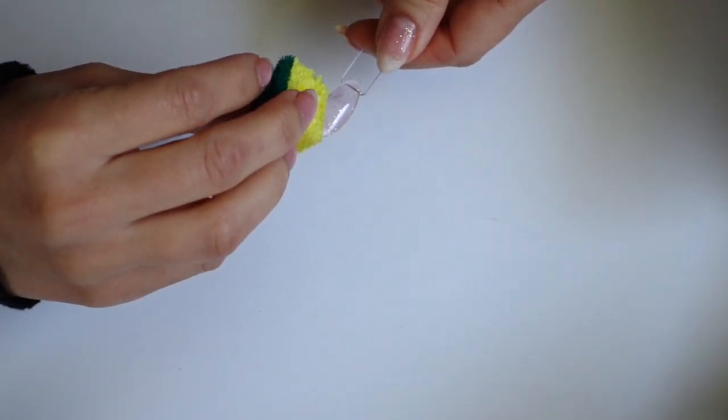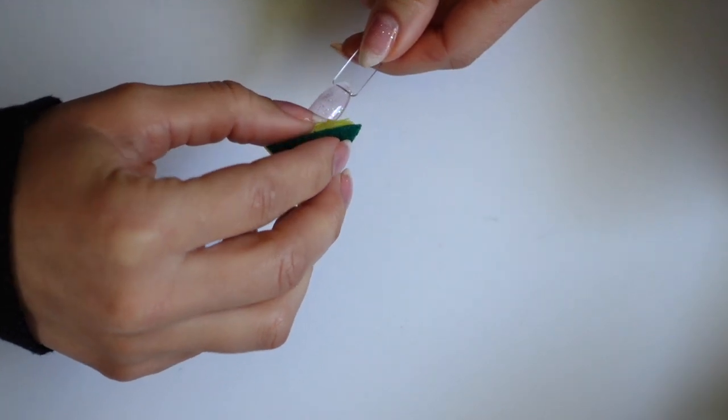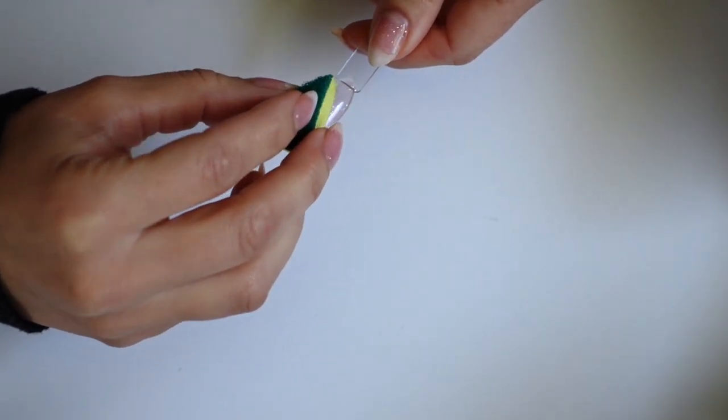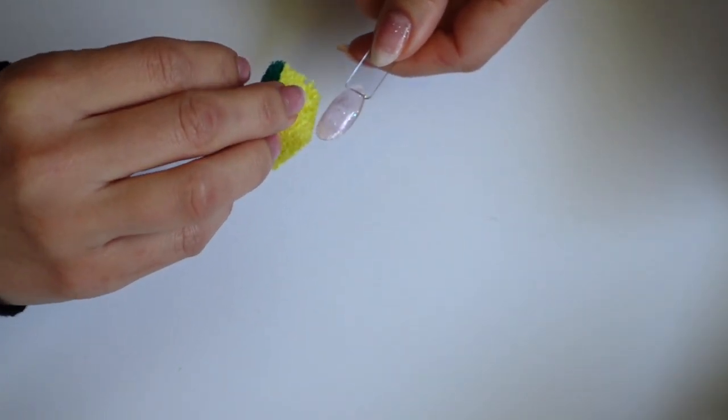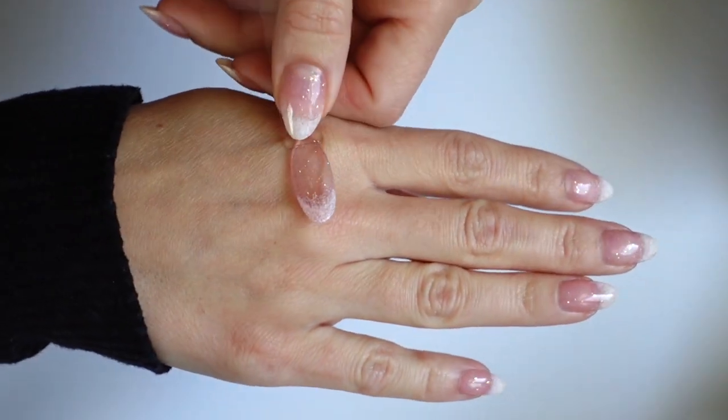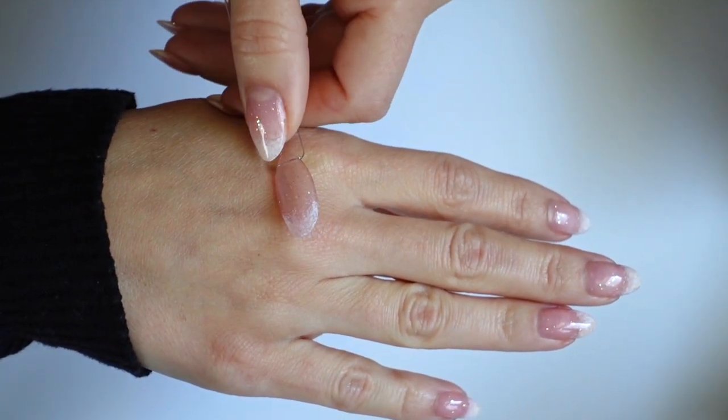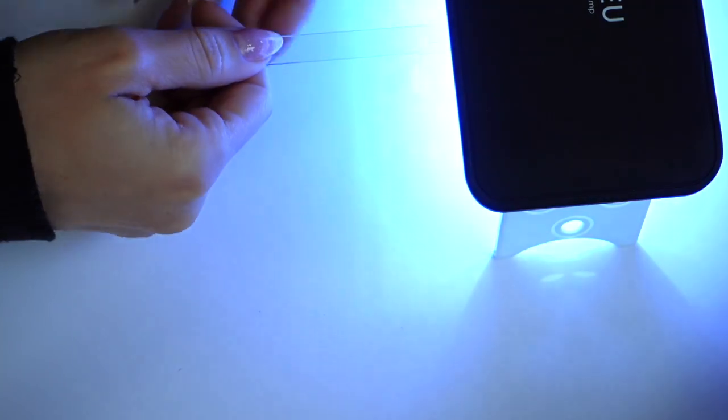It's practically foolproof. If you are someone who has a hard time painting the white tip of a French manicure, this is definitely going to be for you. As you can see here, it looks very similar to my actual thumbnail. I'm going to pop it in the lamp, cure it, pull it out, and do this one more time.